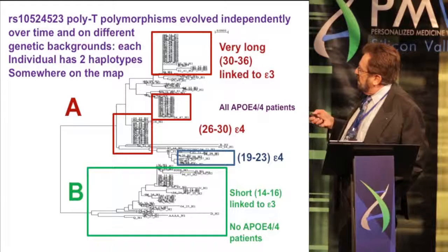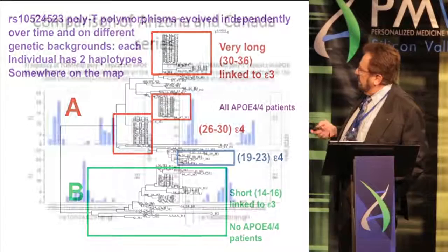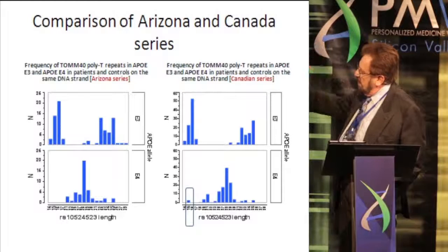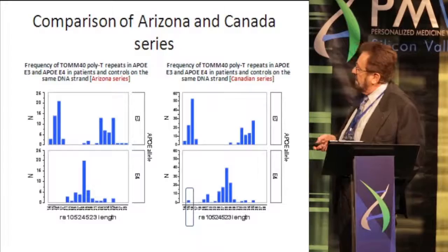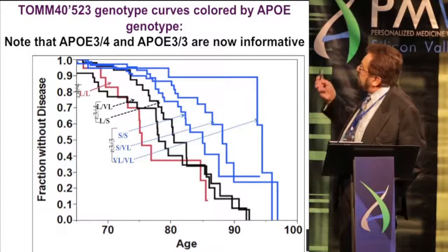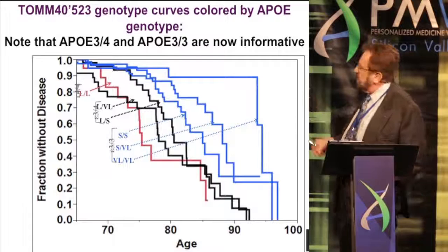APOE4 is in these two clades, which we would call long. If you look at two different populations of Caucasians, you can see that the lengths linked to E3 are at the top and those linked to E4 are at the bottom. So you now develop a three-allele system, and when you use that, it maps all the population, not just the E4 risk.